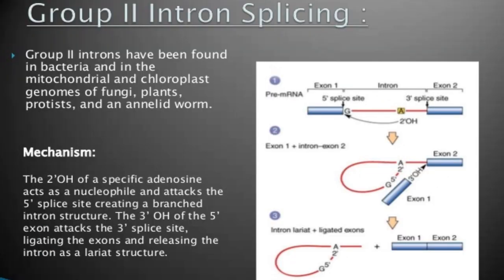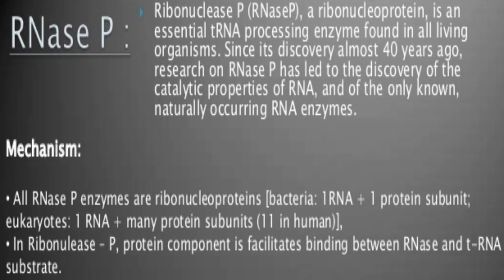Group 2 intron splicing: Group 2 introns have been found in bacteria and in mitochondria and chloroplast genomes of fungi, plants, and protists. Mechanism: the 2' OH of a specific adenosine acts as a nucleophile and attacks the 5' splice site, creating a branched intron structure. The 3' OH of the 5' exon then attacks the 3' splice site, ligating the exons and releasing the intron as a lariat structure.